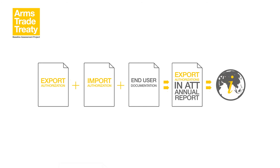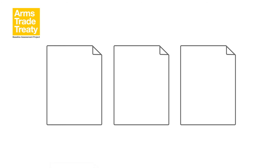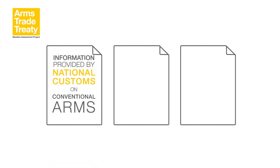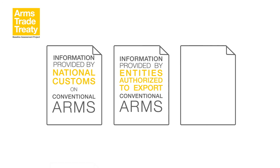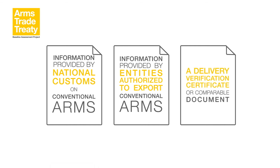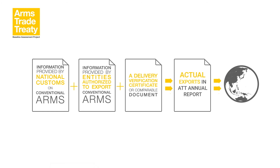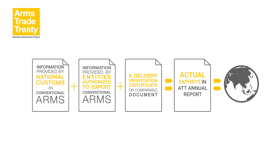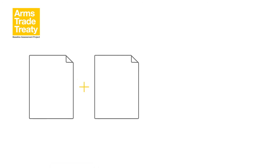If this documentation contains the recommended elements, then a state party will have the required information for providing information on export authorizations in its ATT annual report. Three sources of information can be collated by states to provide information on actual exports for their ATT annual report: first, information provided by national customs on conventional arms that have passed through designated customs points of exit; second, information provided by entities that have been authorized to export conventional arms; and third, a delivery verification certificate or comparable document.